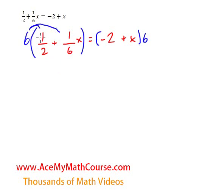6 times 1 half is just 6 over 2. Essentially because the 6 is 6 over 1, 6 times 1 is 6, 1 times 2 is 2. Plus, now 6 times 1 is 6, 1 times 6 is 6, and the x remains.